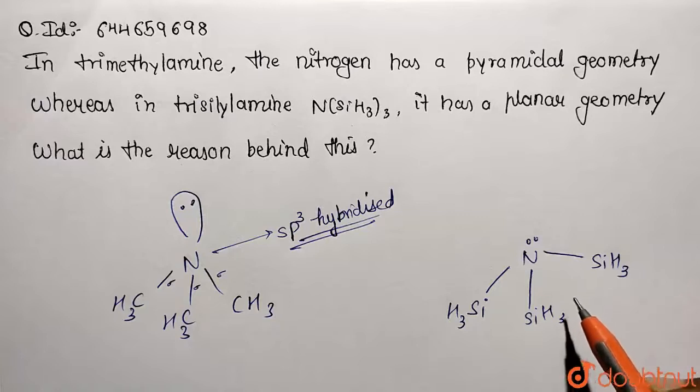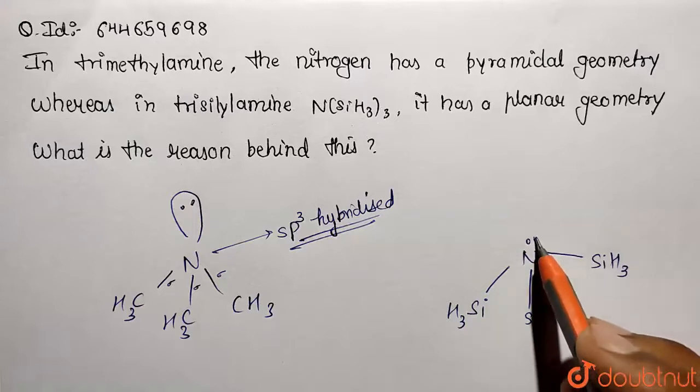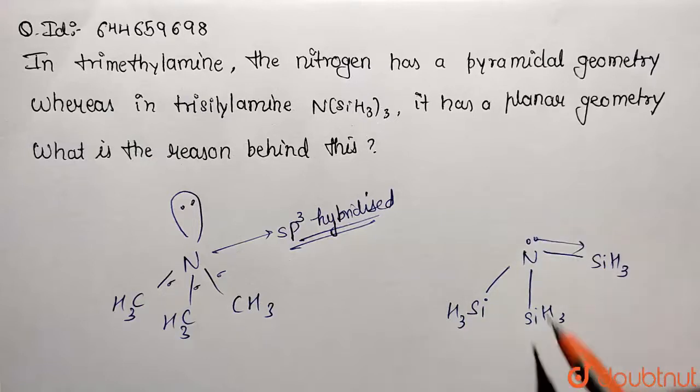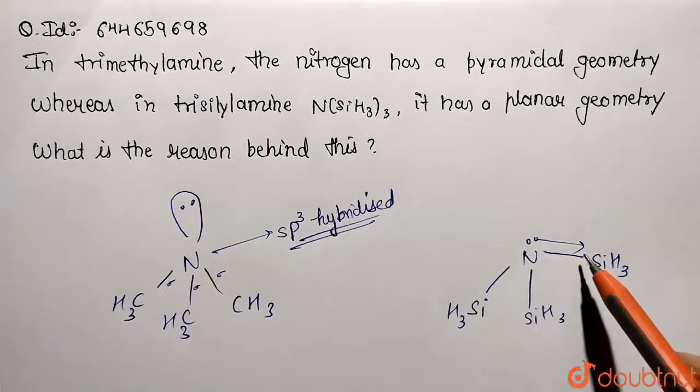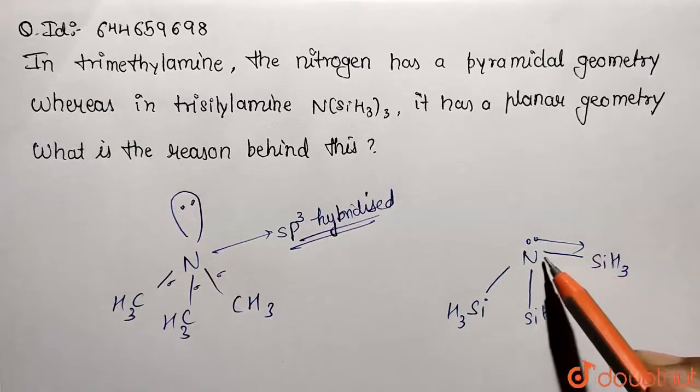And geometry is going to be formed, so this is back bonding taking place. So you can also show that one time it's taking back bonding from this nitrogen to the silicon, one time it is taking place over here, and another time over here.